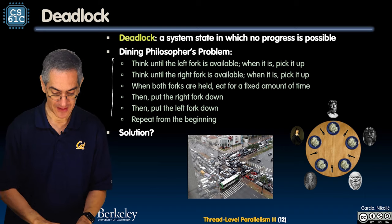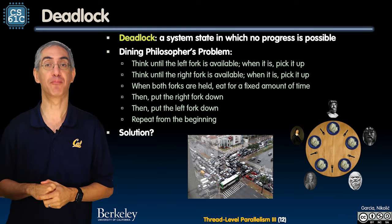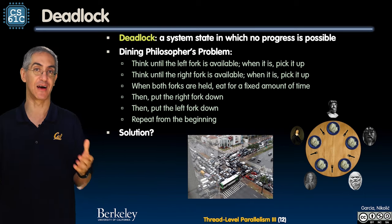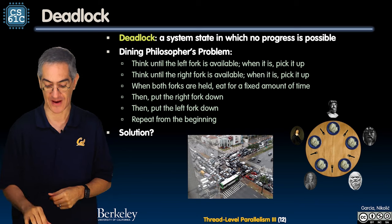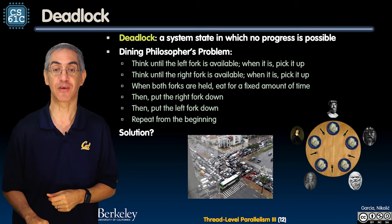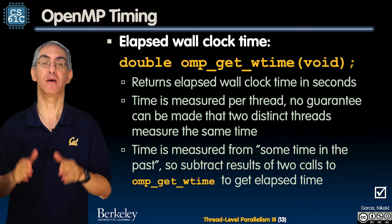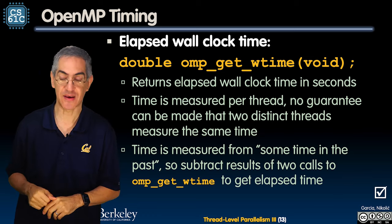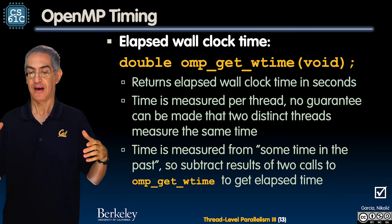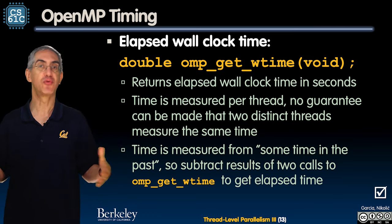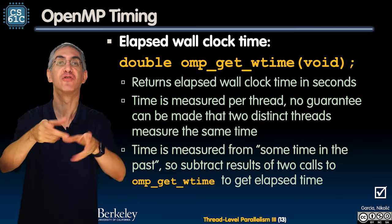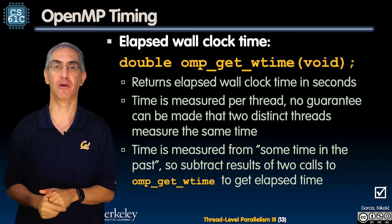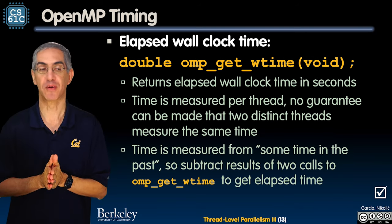All of this is deadlock and livelock — we have to think about how to prevent that. That is something we certainly need to think about. We also want to think about timing: how do we prove that our parallel program actually works faster? How do we adjust the parameters to make it run better?